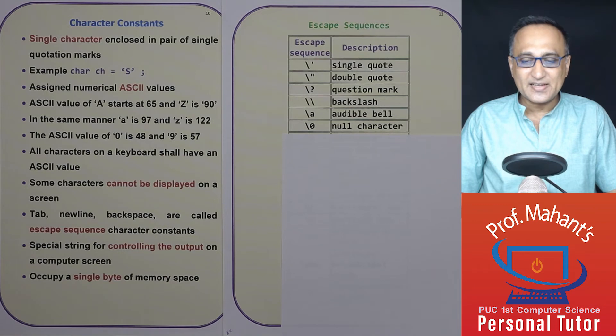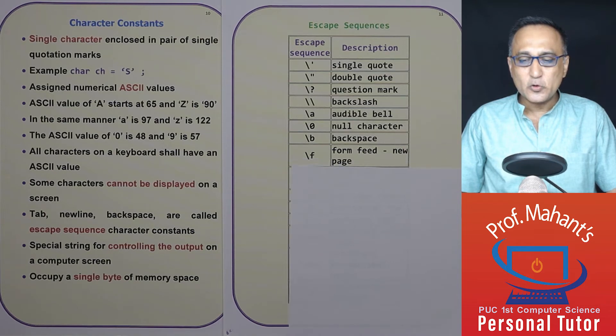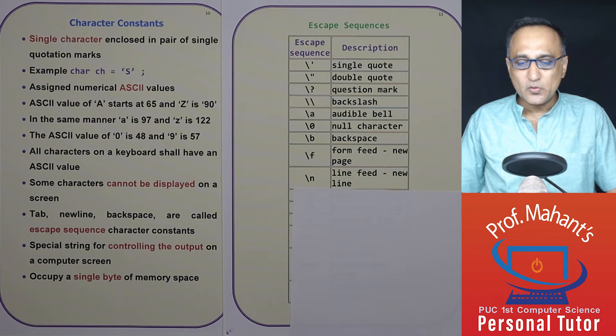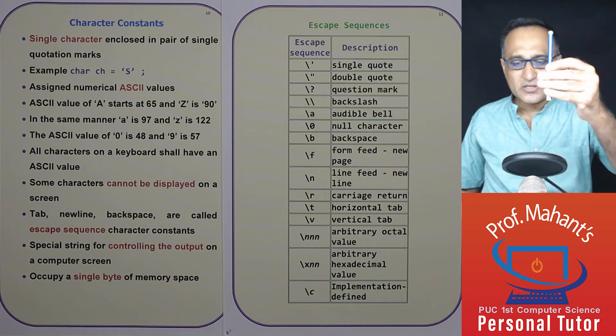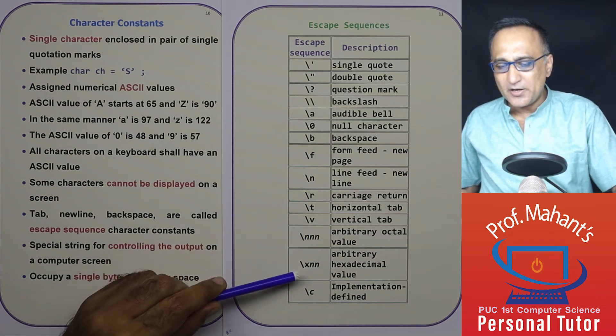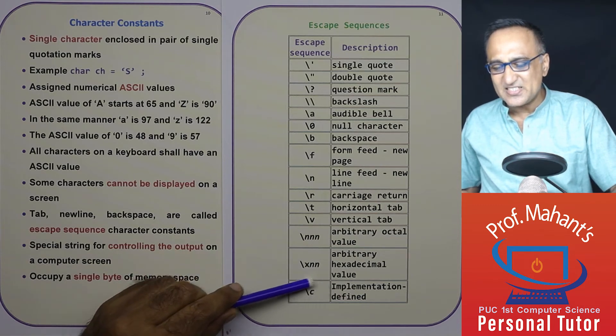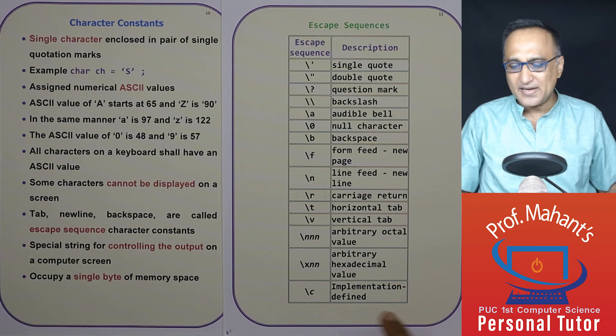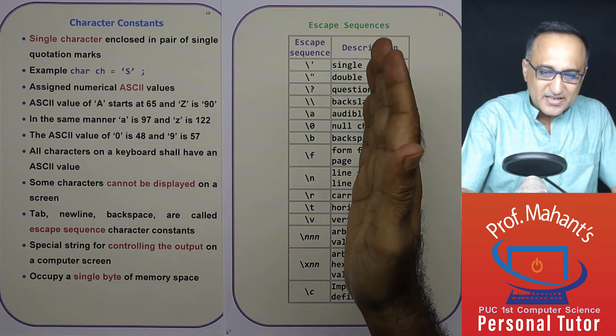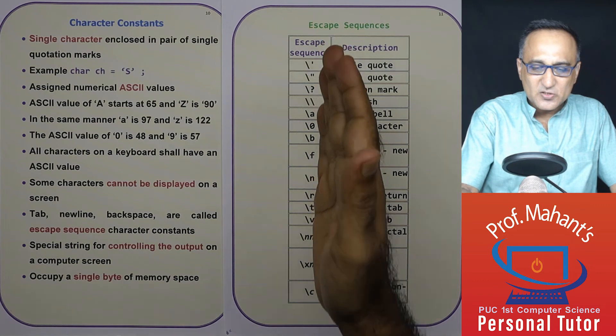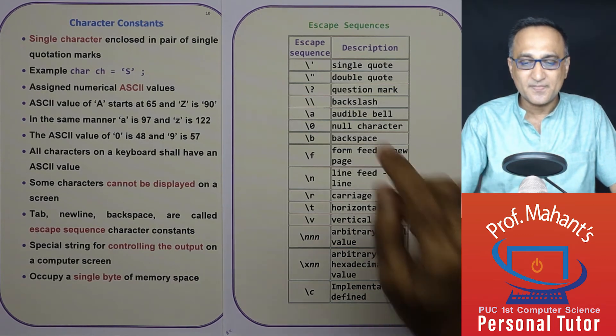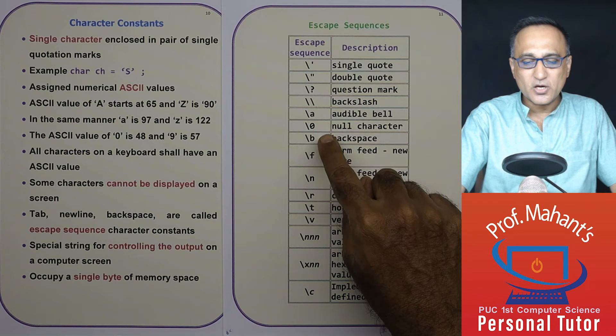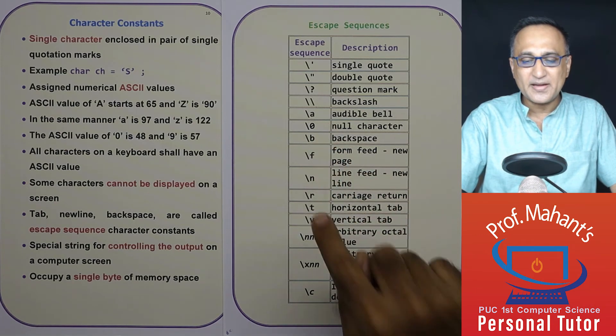Null character we'll deal with in the next minute. Backspace - slash B stands for backspace, slash F goes to the new page, slash N goes to the new line, carriage return, tab, horizontal tab, vertical tab. If you want to display an octal value, this is to display hexadecimal value. So you need to understand escape sequences are special characters which are preceded with the backslash and are not visible on the screen. Most of them are not visible on the screen. Single quote you can see but you cannot see beep, you cannot see the null, you cannot see the backspace, new line and so on.